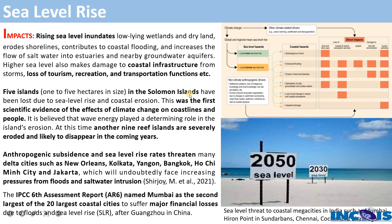One documented impact is that five islands in the Solomon Islands have been lost due to sea level rise and severe coastal erosion — the first scientific evidence of climate change's effect on coastlines. Another nine reef islands are severely eroded and likely to disappear. From this image you can see direct effects and coastal hazards, including submergence of land, enhanced flooding, erosion, salinization, and loss of marine and coastal ecosystems.